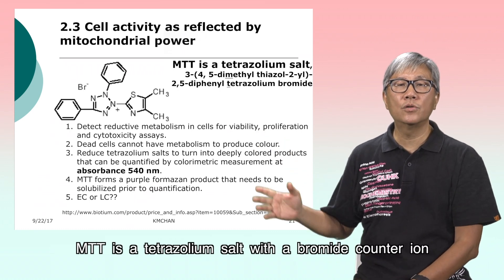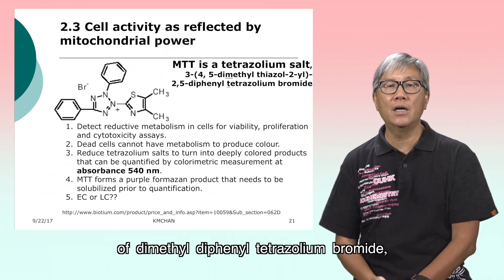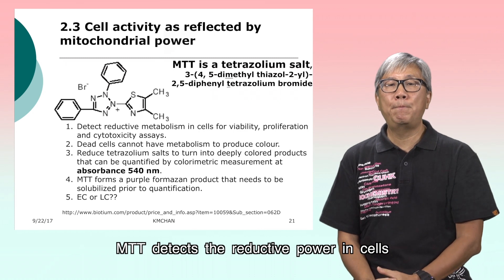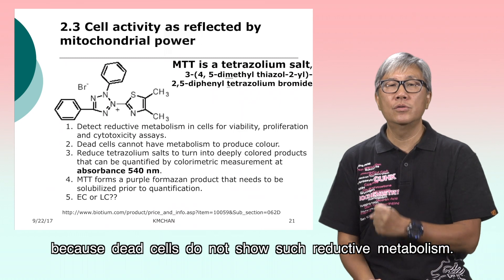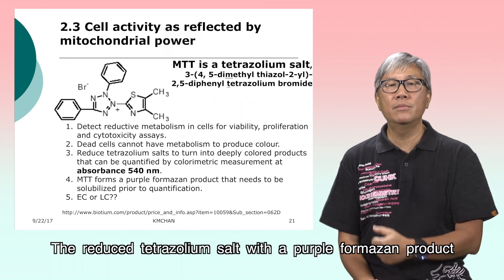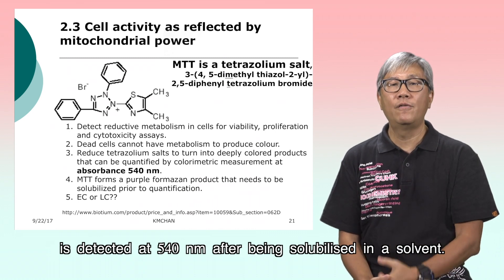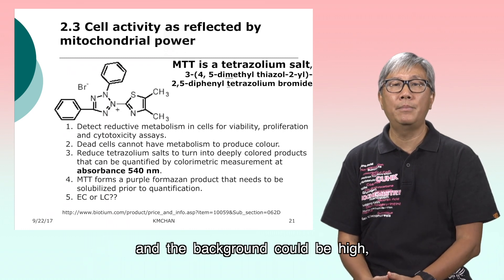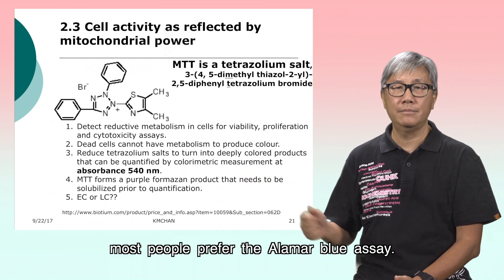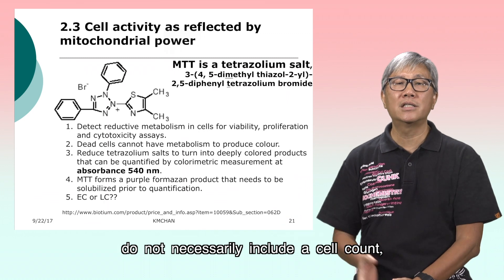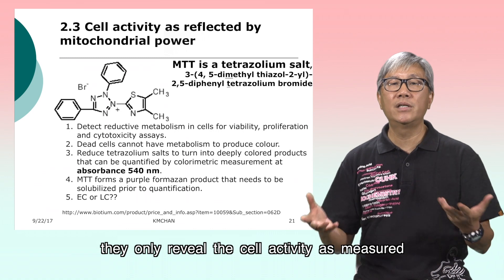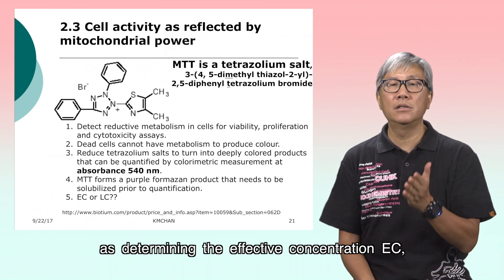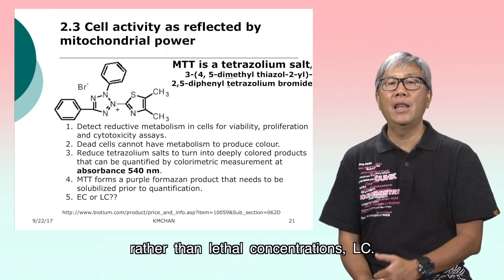MTT is a tetrazolium sodium salt with a bromide counter-ion — specifically, dimethyl-diphenyl tetrazolium sodium bromide — which forms a yellow precipitate. MTT detects the reductive power in cells, because dead cells do not show such reductive metabolism. The reduced tetrazolium produces a purple formazan product detected at 540 nm after being solubilized in a solvent. Because the chemical is not highly soluble and the background could be high, most people prefer the AlamarBlue assay. Since these methods do not necessarily include a cell count, they reflect only cell activity as measured by mitochondrial reducing power. Hence, some people consider them as determining the effective concentration (EC) rather than lethal concentration (LC).